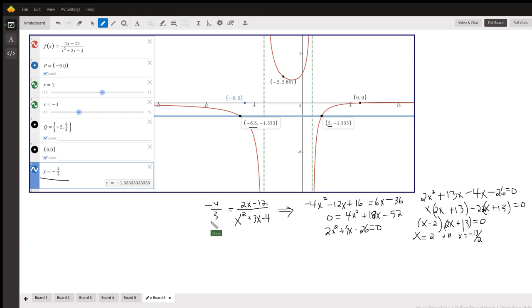You substitute negative 4 thirds for y. There that is. And we want to know, when does that equal this rational function? Since this is a proportion, you could just picture cross-multiplying. So that's negative 4 times this denominator equals 3 times this numerator. So here's what that looks like right here. You've got a quadratic equation.